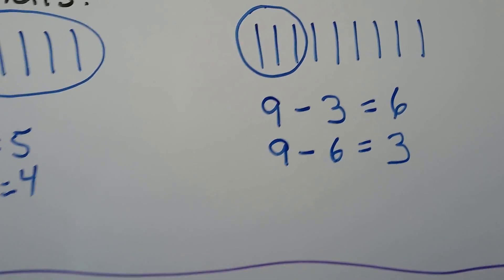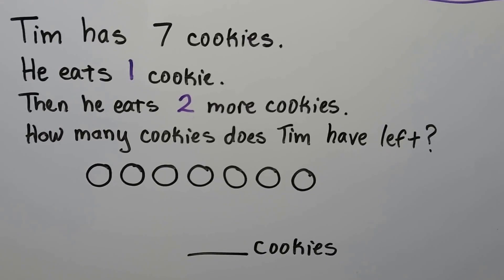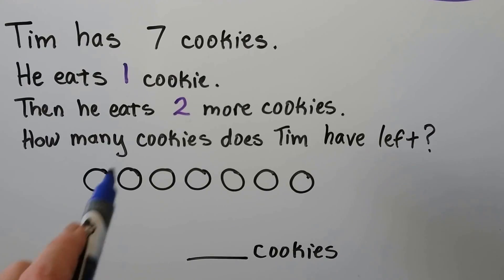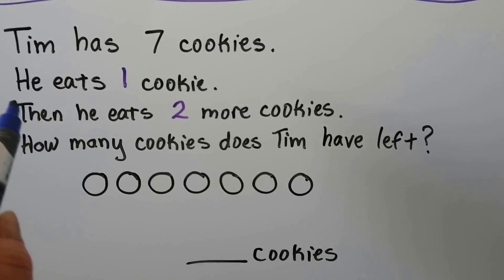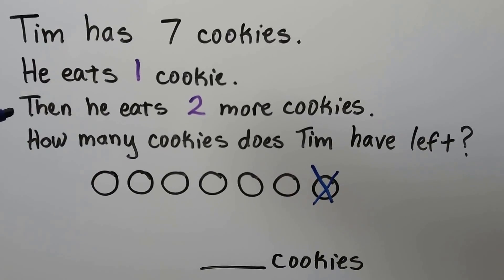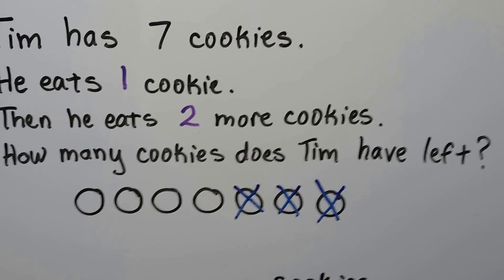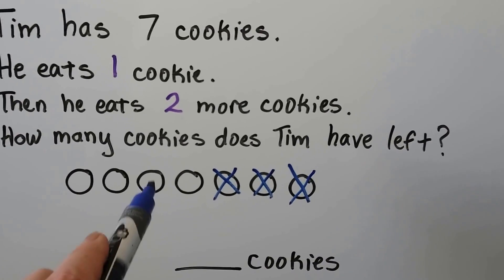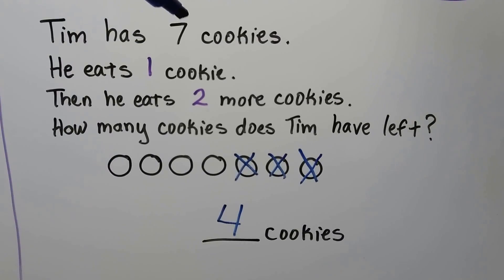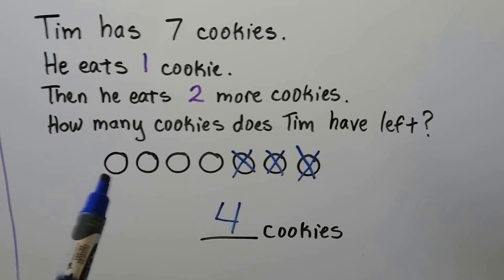Tim has seven cookies. He eats one cookie, then he eats two more cookies. How many cookies does Tim have left? We can make circles for our cookies — he has seven. He eats one cookie, so we'll cross it out. Then he eats two more cookies, so we'll cross out one, two. How many cookies does Tim have left? One, two, three, four. He has four cookies. We start with the number given, took one away and then two more away, and then we saw what was left — four cookies.